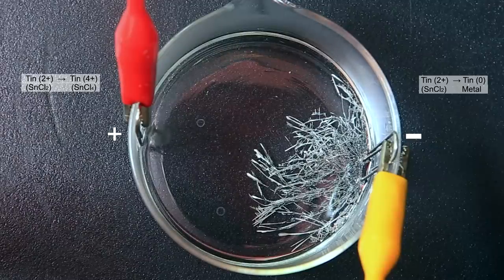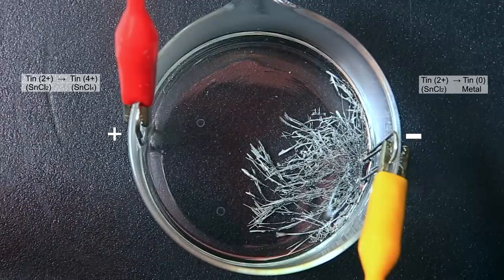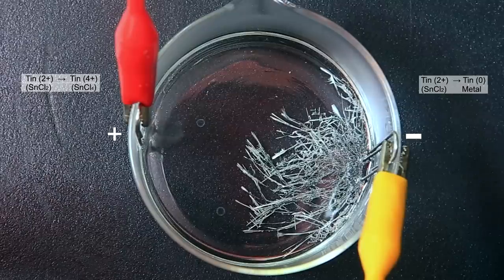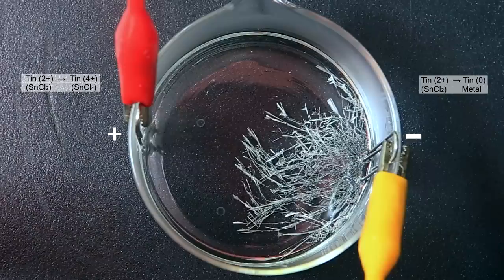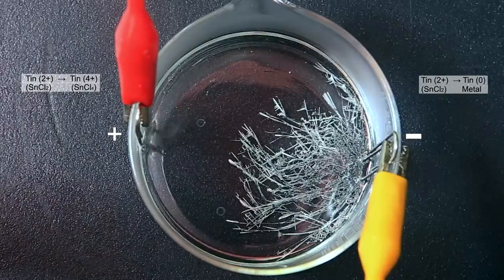At the positive side tin 2+ is giving away two electrons to form tin 4+, and at the negative side it's receiving two electrons to form tin 0 or tin metal.